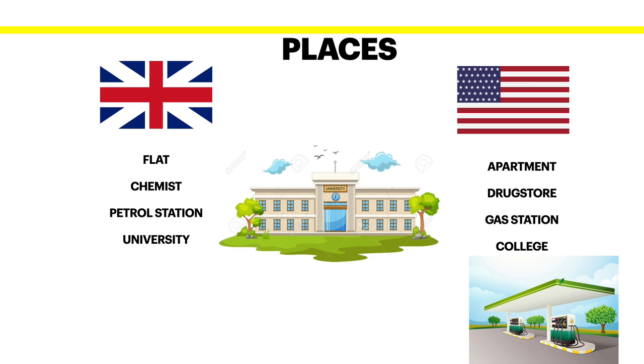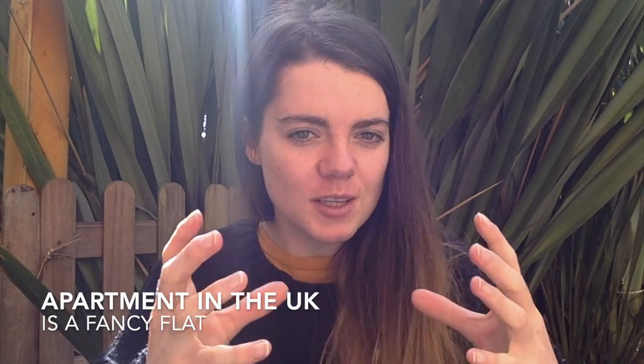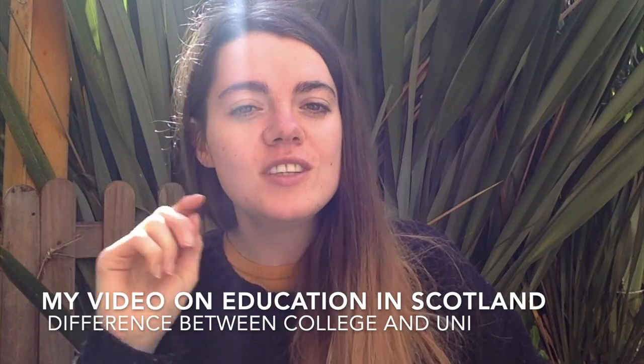Now let's look at some differences in places. What we call a flat in the United Kingdom is known as an apartment in the US. A chemist in the UK is referred to as a drug store in the US. We have a petrol station in the UK which is a gas station in the US, and we say university in the UK whereas Americans refer to it as college. For me, 'apartment' feels like something fancy and modern, perhaps at the beach — it's generally a flat. And college in Scotland is something different, not quite at the same level as university.